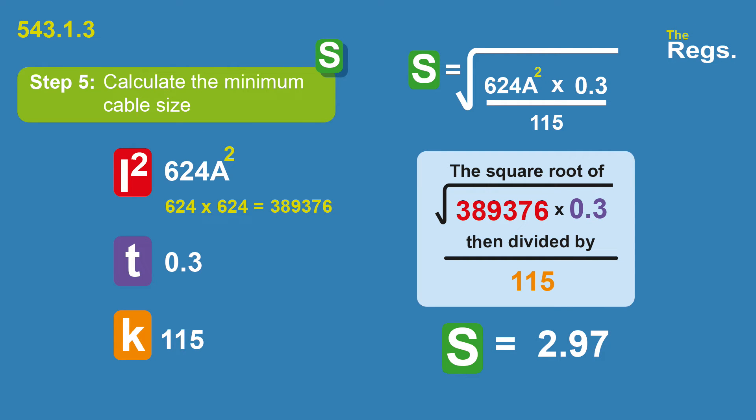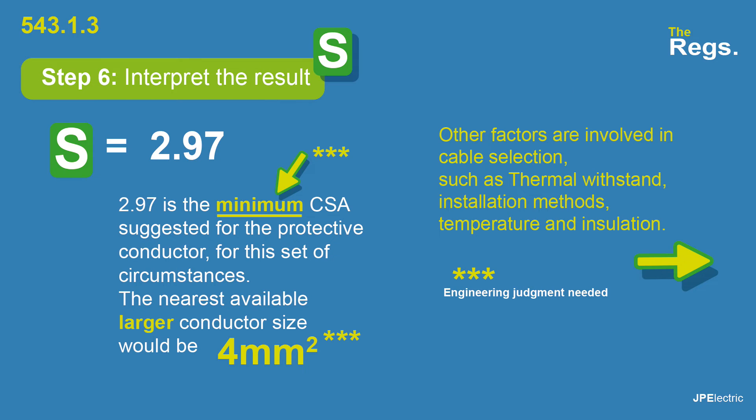We've got all the numbers we need: fault current, time, and K value. So the sum is the square root of 624 squared times 0.3, then divide that total by 115. We don't square root the whole sum — just square root the top line, then divide by 115. That gives us a minimum cable size of 2.97 millimetres squared. So the nearest available larger conductor size would be 4 millimetres squared — you have to go larger, as 2.97 is the absolute minimum.